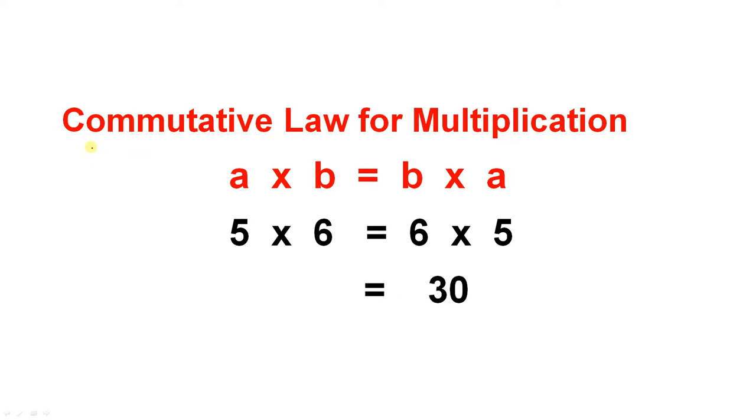The commutative law for multiplication is similar, except it does involve multiplication. You can multiply two numbers a and b in any order and you'll arrive at the same answer. So if you multiply 5 and 6 together, that gives you the same answer as multiplying 6 and 5 together, and that answer is 30.